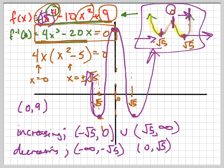That's going to be 25 minus 50. So negative 25 plus 9, which is negative 16.